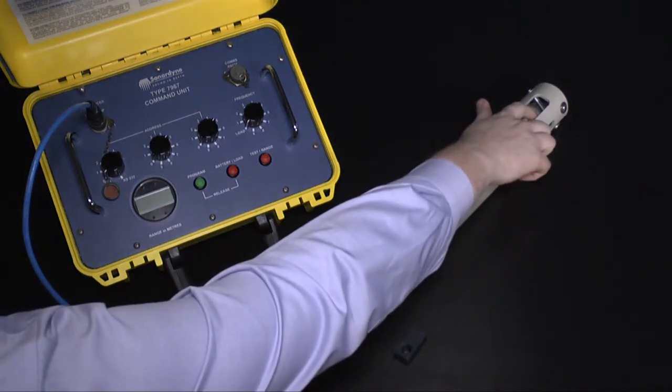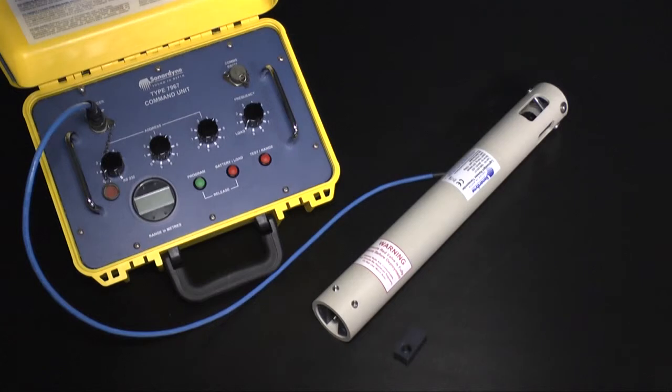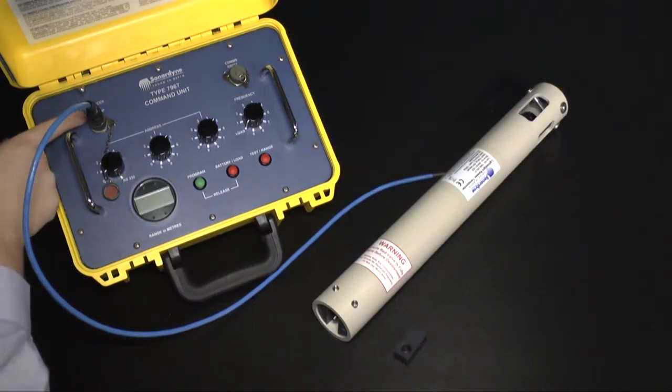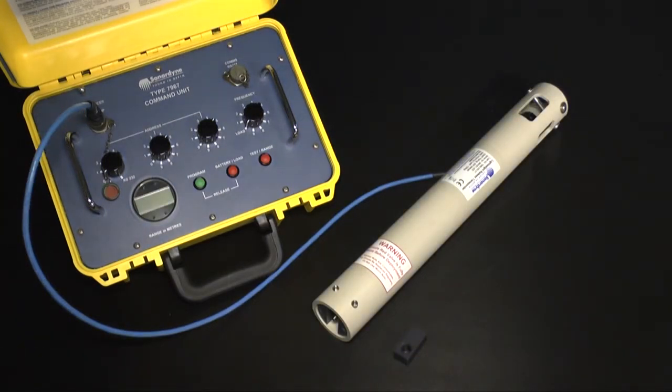Connect the looped end of the test lead directly to the transducer on the LRT. Connect the other end to the command unit. Note, you can only use the test loop to load the release and not the remote transducer.